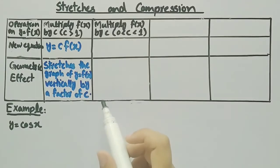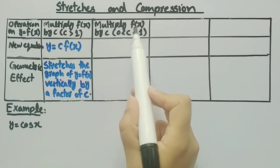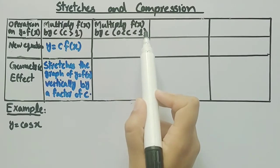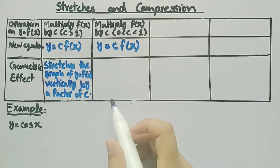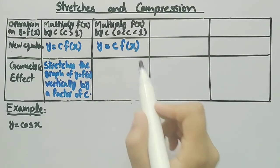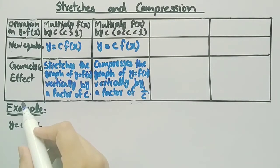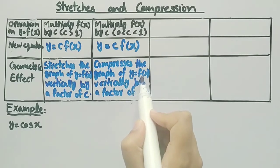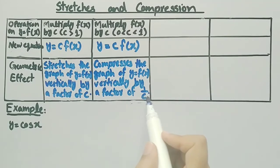The second operation is when we multiply f(x) by a constant c where c is between 0 and 1. The new equation formed is y = c times f(x), and its geometric effect is that it compresses the graph of y = f(x) vertically by a factor of 1/c.